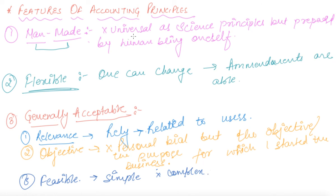So these are the features of accounting principles: first, they are man-made; they should be flexible, relevant, objective, and feasible. With this, our topic on the meaning and nature of accounting principles is done. For further classes, please download the Scholars Learning app. Hope you are able to make your concepts and studies easy and simple. Thank you.